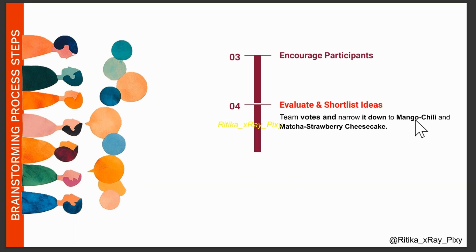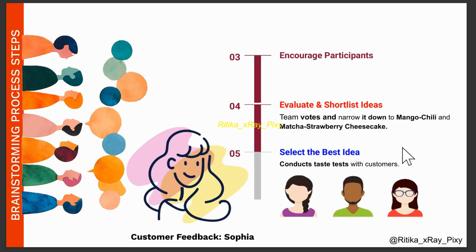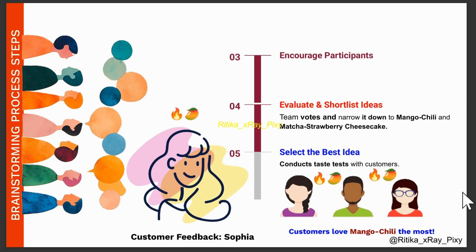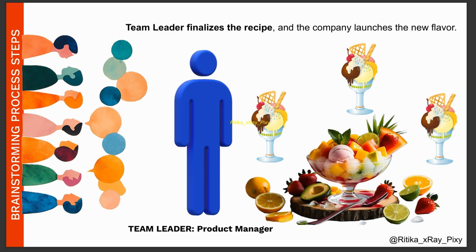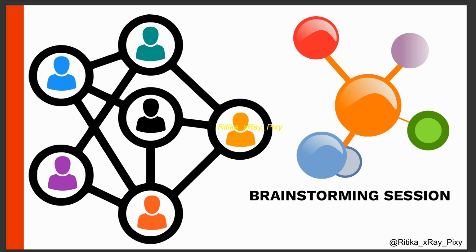Step four: evaluate and shortlist ideas. The team votes based on uniqueness, taste, and customer interest, and they narrow it down to mango chili and strawberry cheesecake. Step five: select the best idea — they test it with customers. Sophia conducts a taste test and customers love mango chili the most. Julie then creates a marketing campaign called 'Spicy Mango Delight — The Summer Sensation,' John finalizes the recipe, and the company launches the new flavor. Brainstorming helped the team come up with innovative ideas through collaboration.